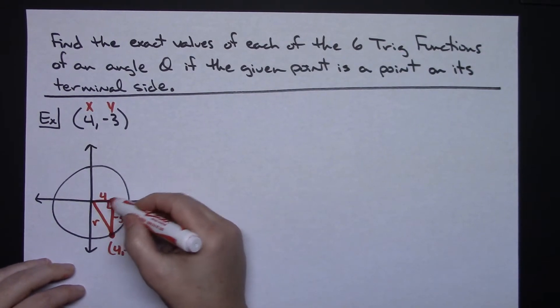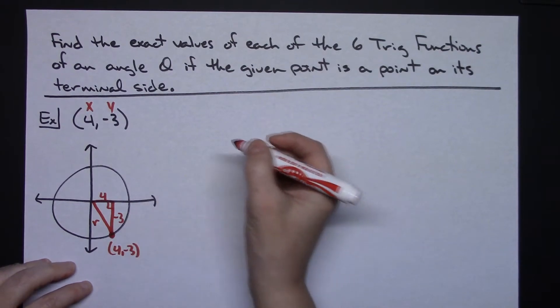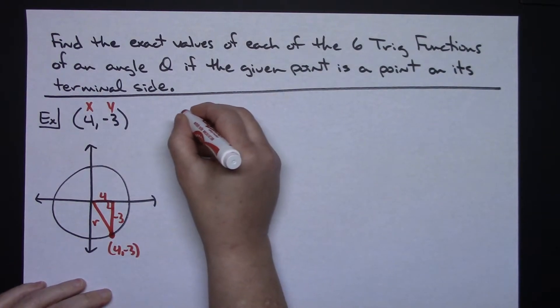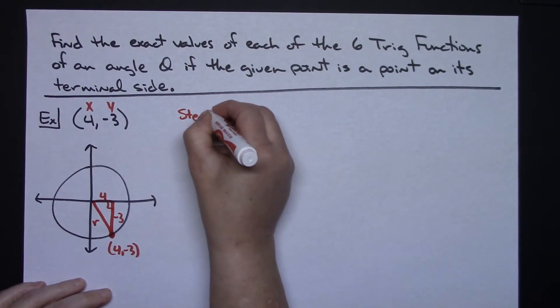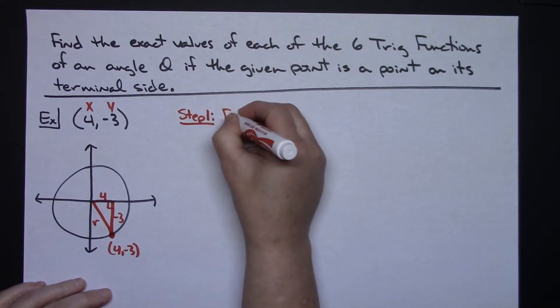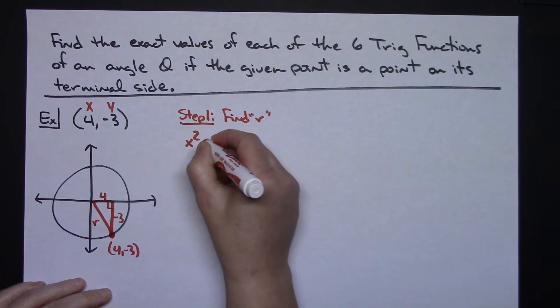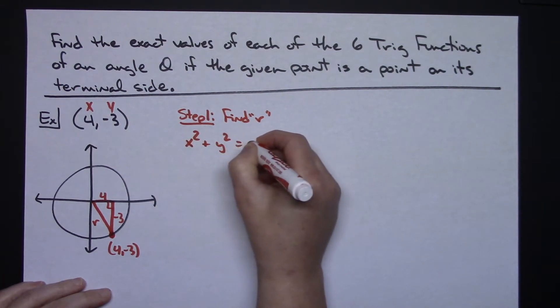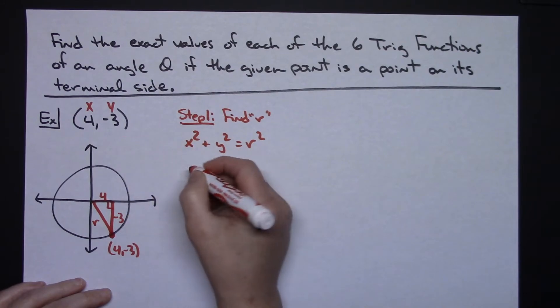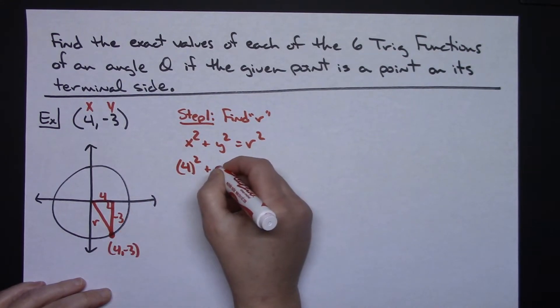So right triangle, Pythagorean theorem, step 1, find your radius. So we're going to do that with x squared plus y squared equals r squared. I know my x value is 4. I know my y value is a negative 3.